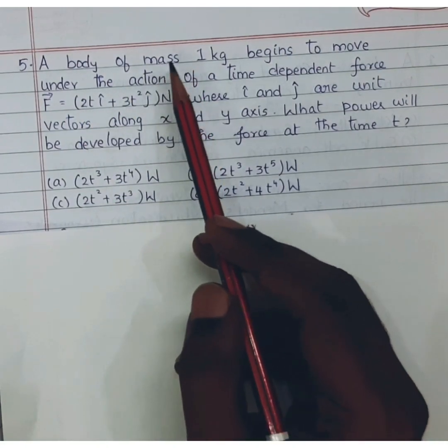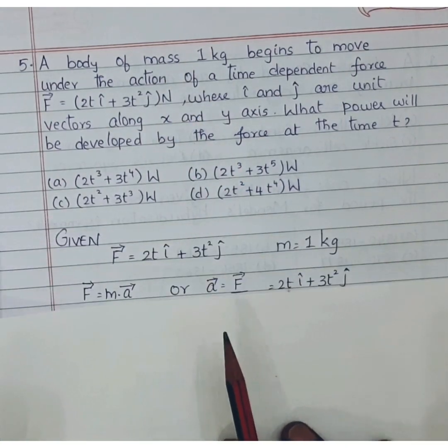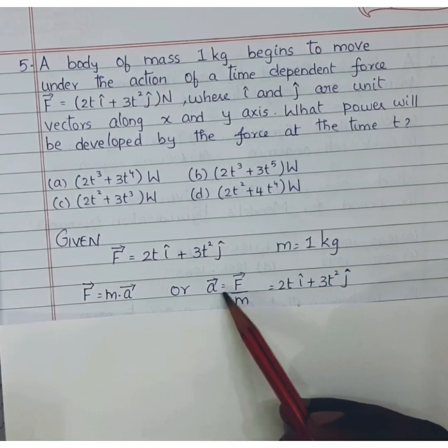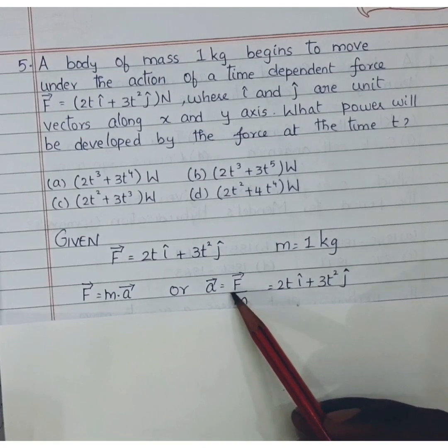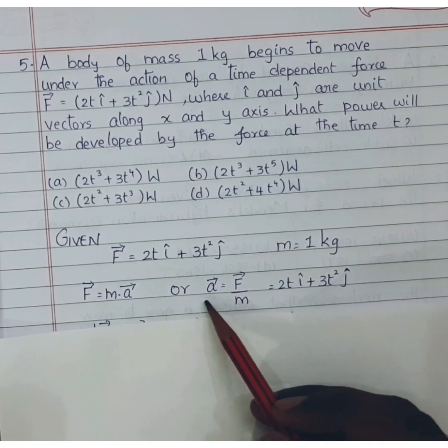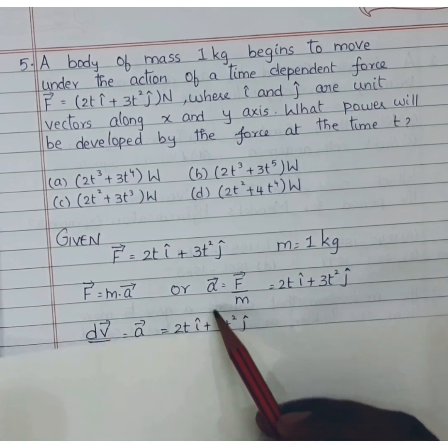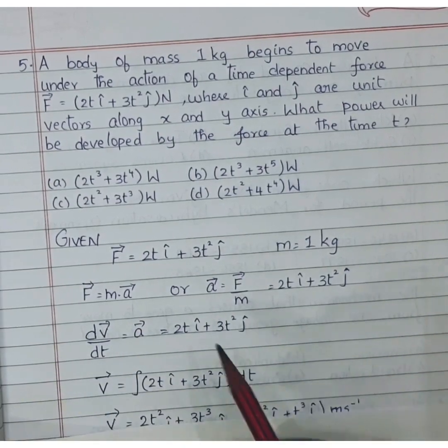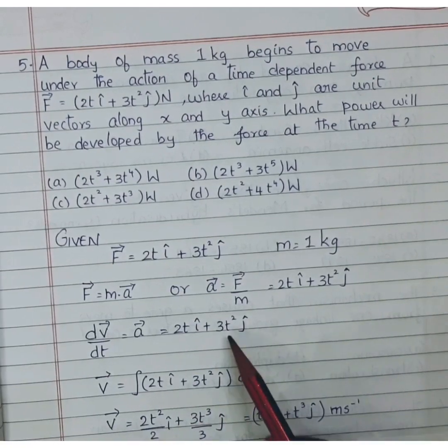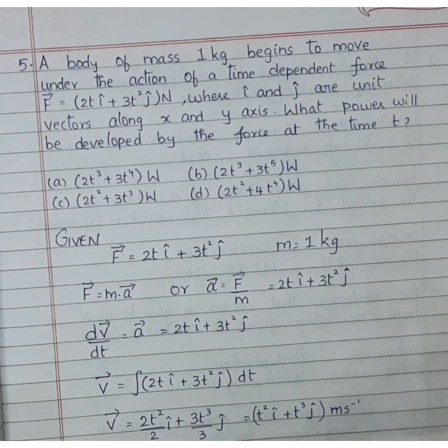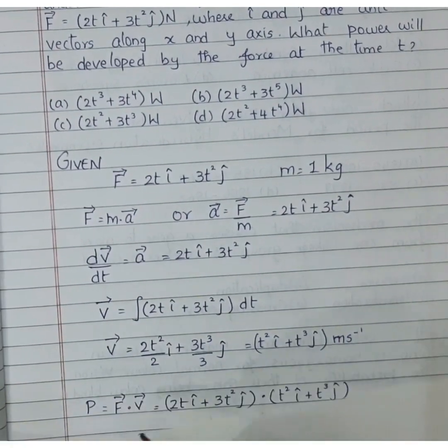So from force and mass I think we can find acceleration. We know that F is equal to ma or acceleration is equal to F by m. m is a scalar so a vector is equal to F vector by scalar m. Since m is 1 kilogram here, a vector will be same as F vector. So from acceleration how to find velocity? Acceleration is nothing but differentiation of velocity. So velocity is nothing but integration of acceleration. So if we integrate this, integration of 2t is 2t square by 2 and integration of 3t square is 3t cube by 3. So I will be getting t square i cap plus t cube j cap.